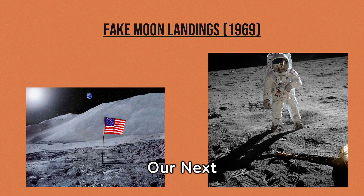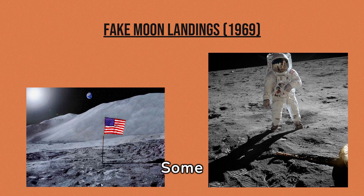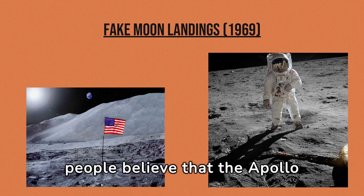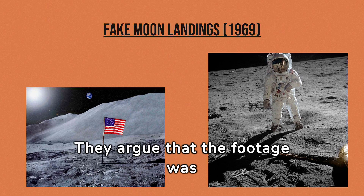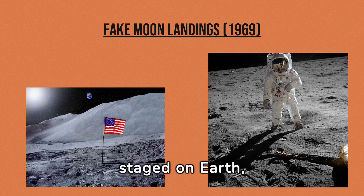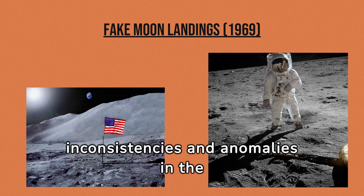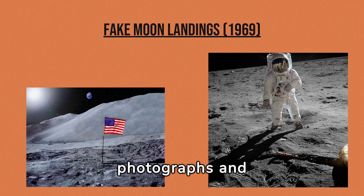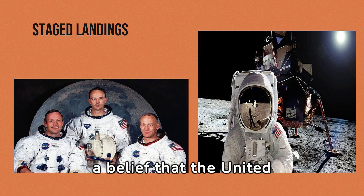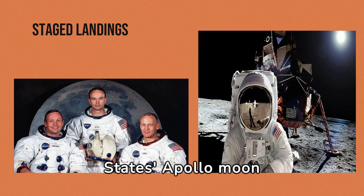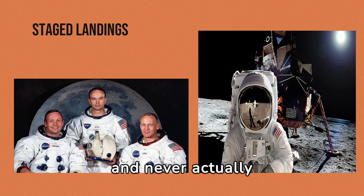Our next conspiracy is the moon landings in 1969. Some people believe that the Apollo moon landings were faked by NASA to win the space race against the Soviet Union. They argue that the footage was staged on Earth, pointing to various inconsistencies and anomalies in the photographs and videos. The moon landing hoax conspiracy theory is a belief that the United States Apollo moon landing in 1969 was staged and never actually occurred.